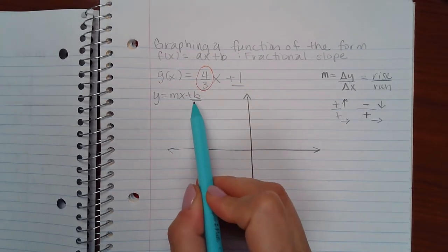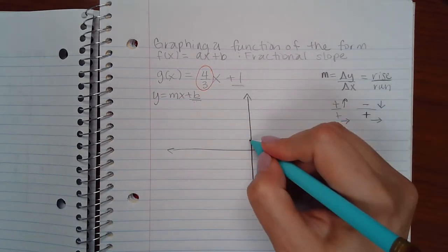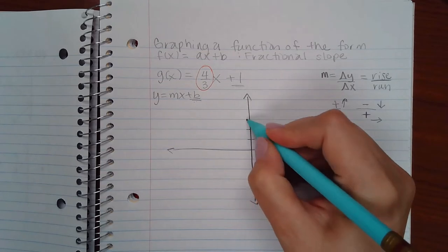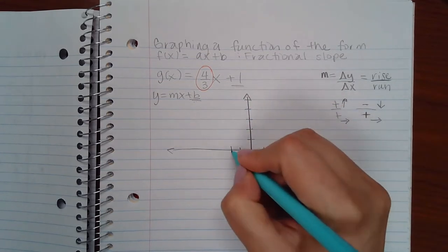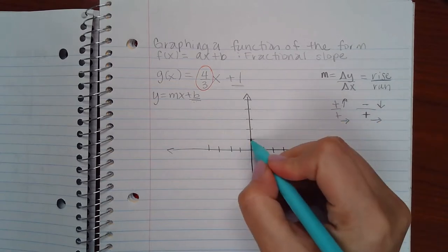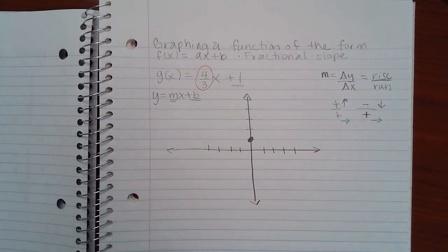b is your y-intercept. b stands for begin. That's where you're going to begin. So I'm going to begin with my y-intercept of positive 1. And then m is going to be the way I move to get to the next point.